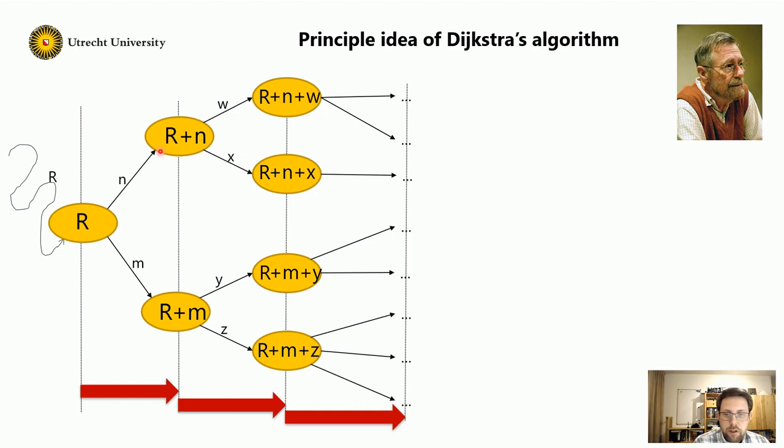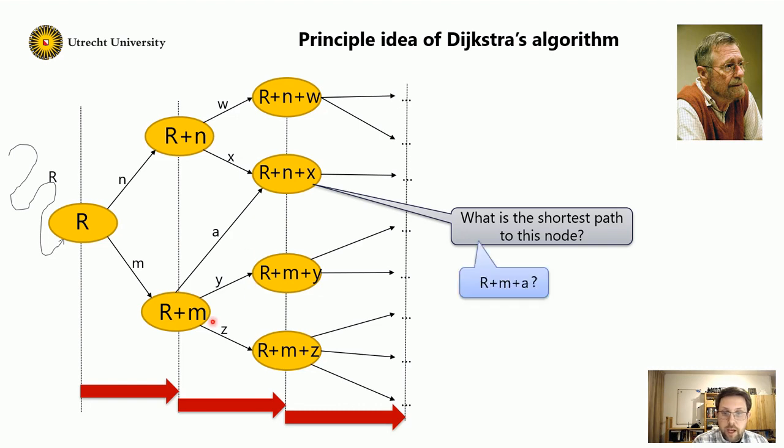Now consider the following situation. Here I have this node r plus m, and it also has an edge to this node r plus n plus x on distance a. So what now is the shortest path to this node r plus n plus x? Is it r plus m plus a, or is it still r, n, x? So which of the two do you choose? Well, you want to have the shortest. So if r plus m plus a is the shortest, then you change this to r plus m plus a.